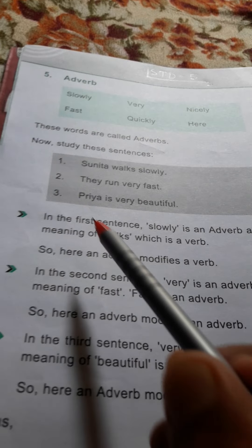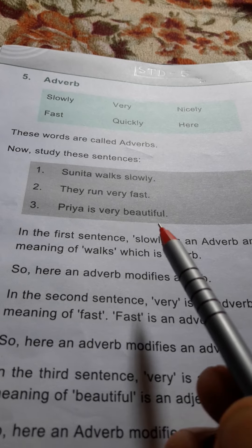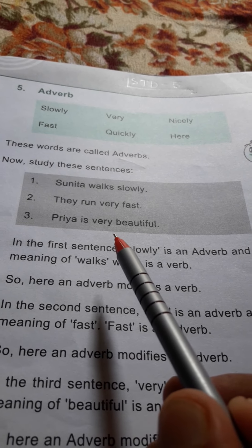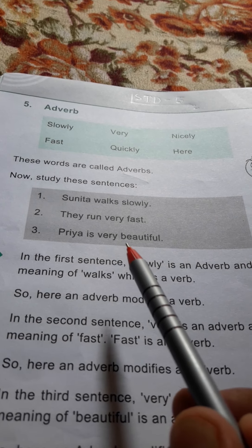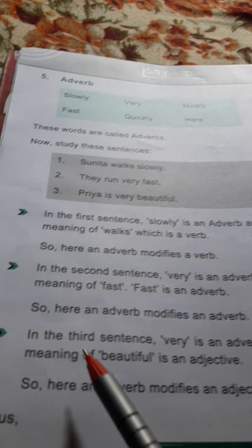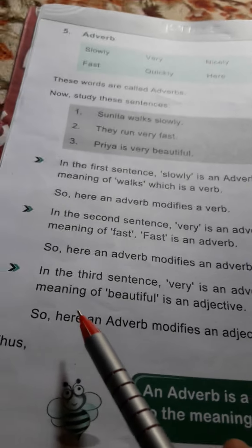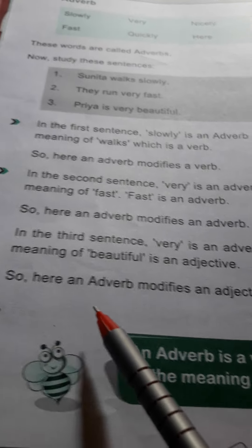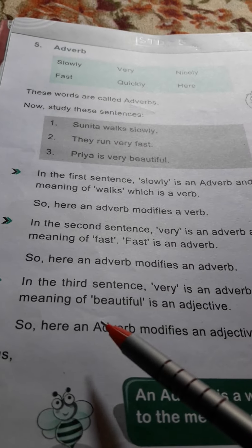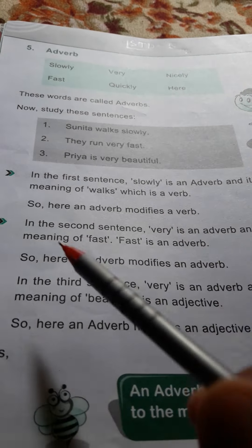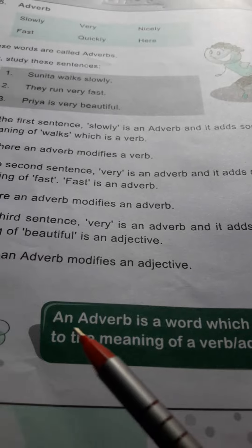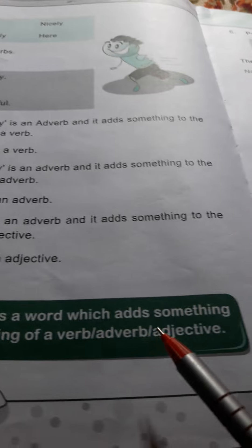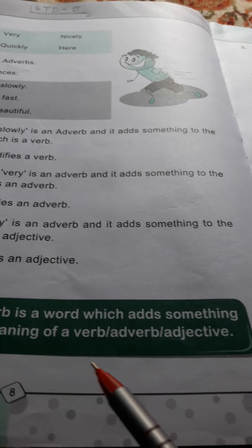In the third sentence, very is an adverb and it adds something to the meaning of beautiful, that is an adjective. So here an adverb modifies an adjective. After these three conclusions, we get the definition of adverb: An adverb is a word which adds something to the meaning of a verb, adverb, or adjective.